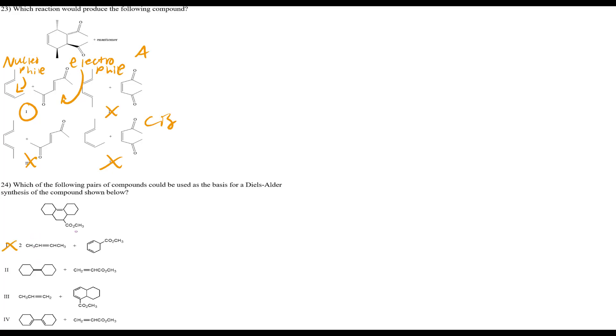Question 26: which diene is most reactive in the Diels-Alder reaction? B and D are isolated — wrong. Between A and C: C is the correct answer because it has electron-donating methyl groups creating a resonance/electron-flow situation. The methyl groups allow electrons to move through the system like a highway, and during brief moments when electrons shift away, the molecule is driven to react with a dienophile to compensate.